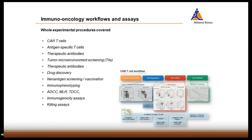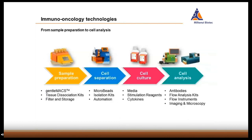In such workflows, like depicted on the lower right side for the CAR T cell workflow, all product solutions that you need for a respective field of immuno-oncology interest and to successfully perform given experiments are covered from start to finish. Reference data is of course included. Our immuno-oncology products can also be categorized into their respective technologies: sample preparation, cell separation, cell culture, and cell analysis. Whatever way you choose to look at our portfolio and to categorize the products, it will be helpful to find your ideal immuno-oncology solution.